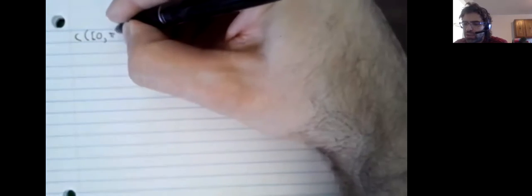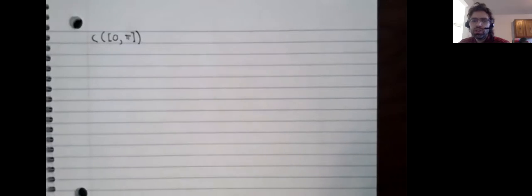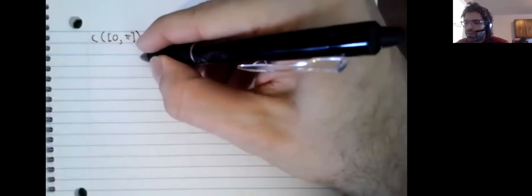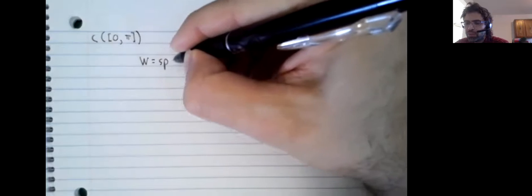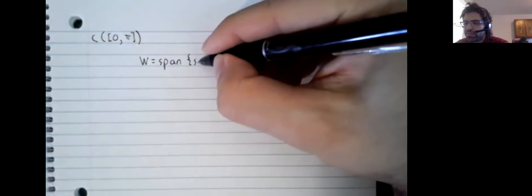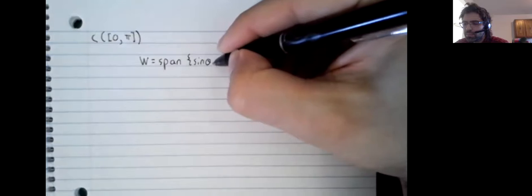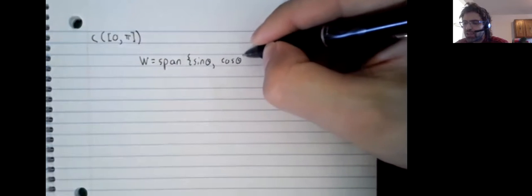So, for example, let's look at the space of continuous functions from zero to pi, and let W be the span of sine and cosine.